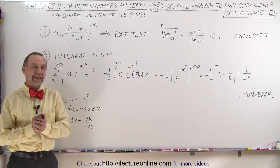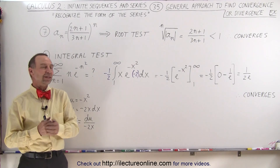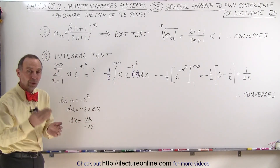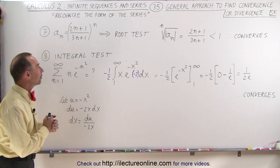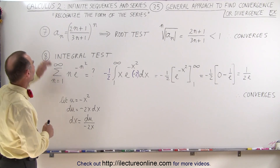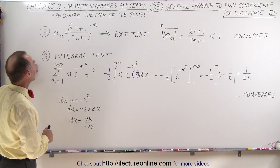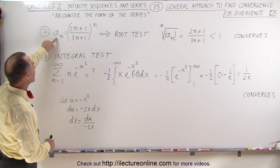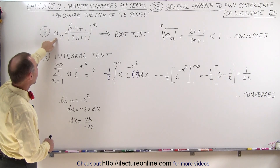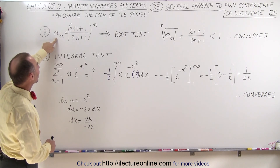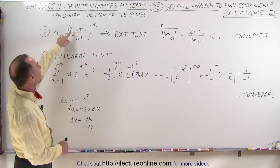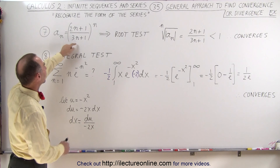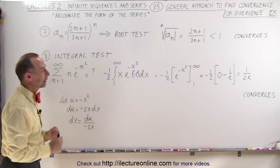Welcome to our lecture online. Now let's take a look at the last two examples that we saw in one of those previous videos, number 7 and number 8. For number 7, we have the term a sub n as being (2n plus 1) divided by (3n plus 1), raised to the n power.